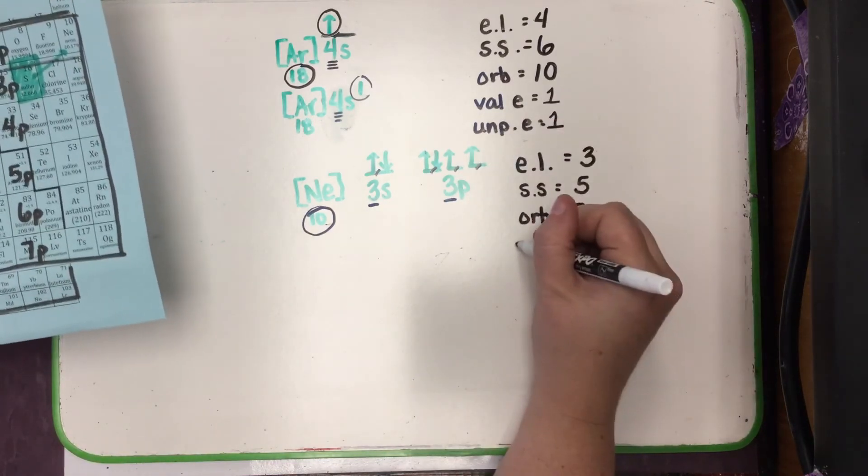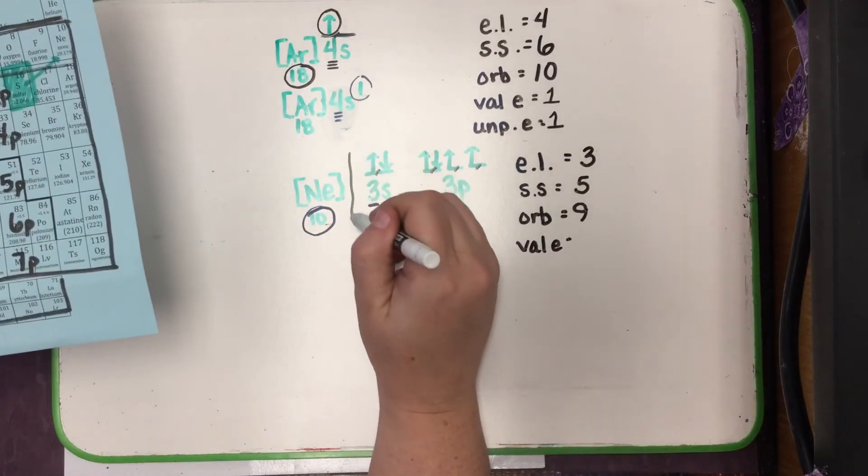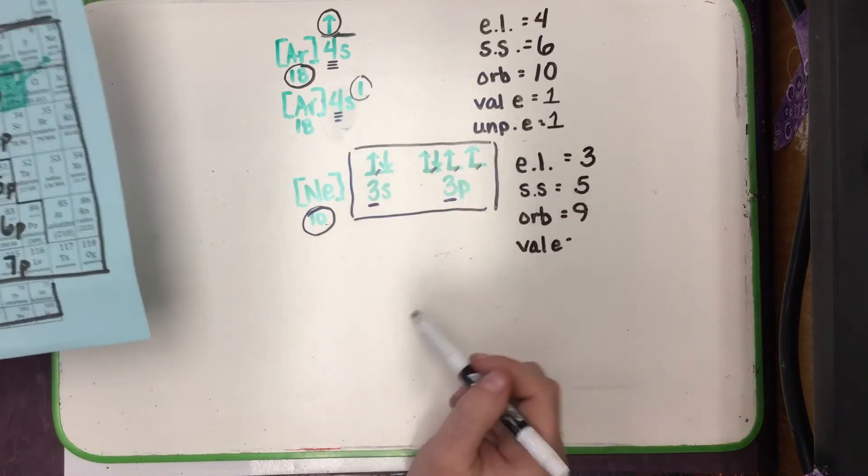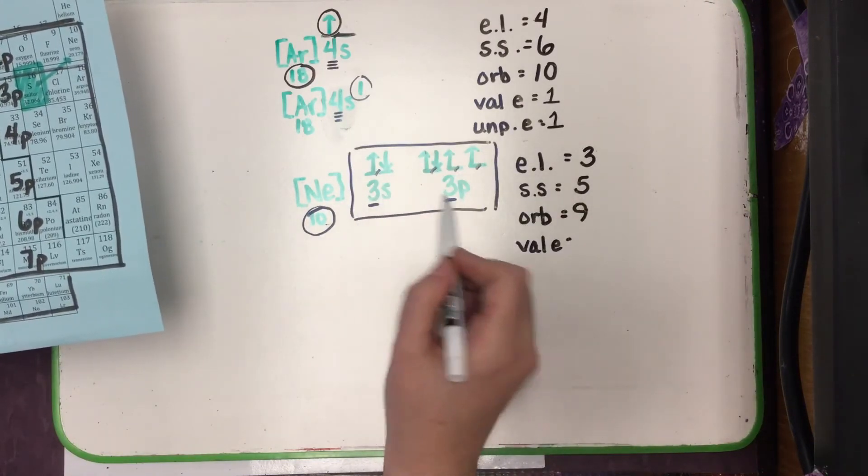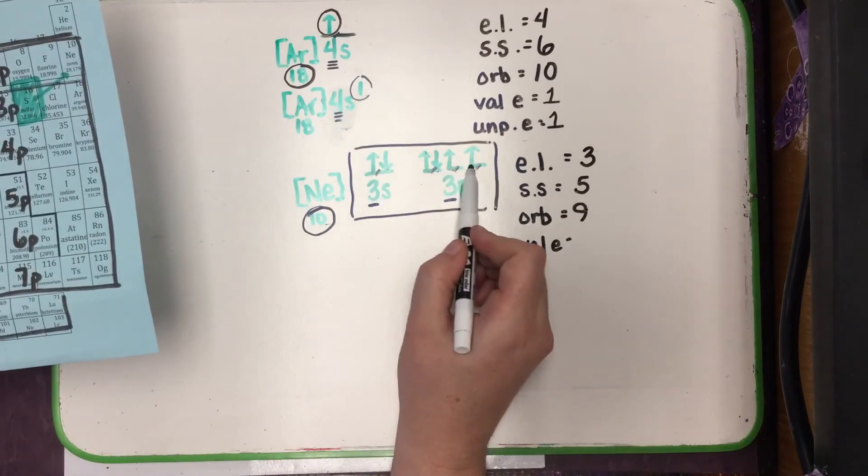And valence electrons are these electrons that are above the biggest number. Since the biggest number here is 3, we need to count all the electrons that are above a 3: 1, 2, 3, 4, 5, 6.